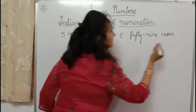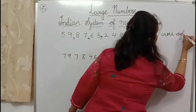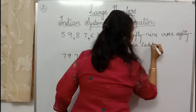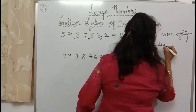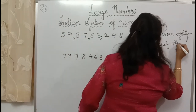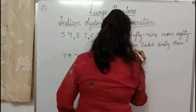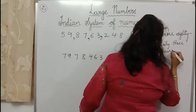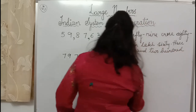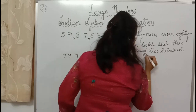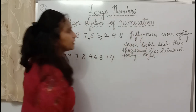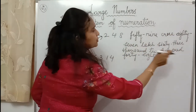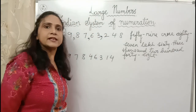So the number name is: fifty-nine crore, eighty-seven lakh, sixty-three thousand, two hundred forty-eight. This way you are going to write the number name.